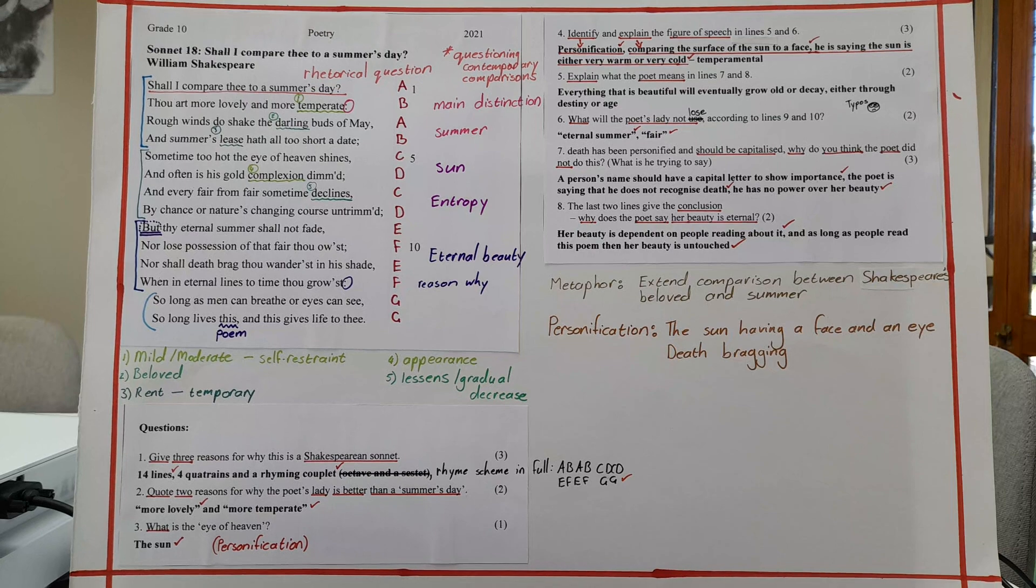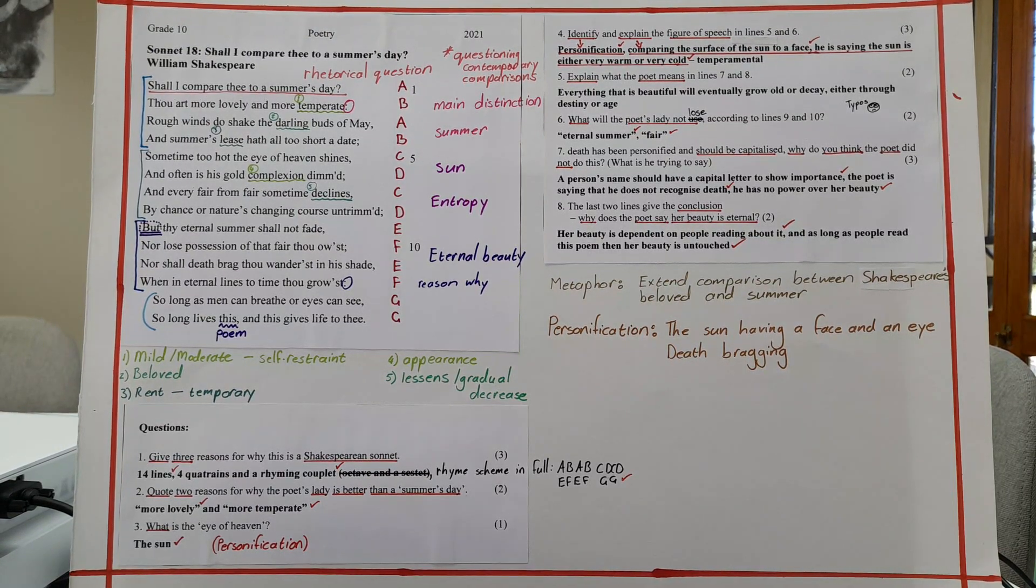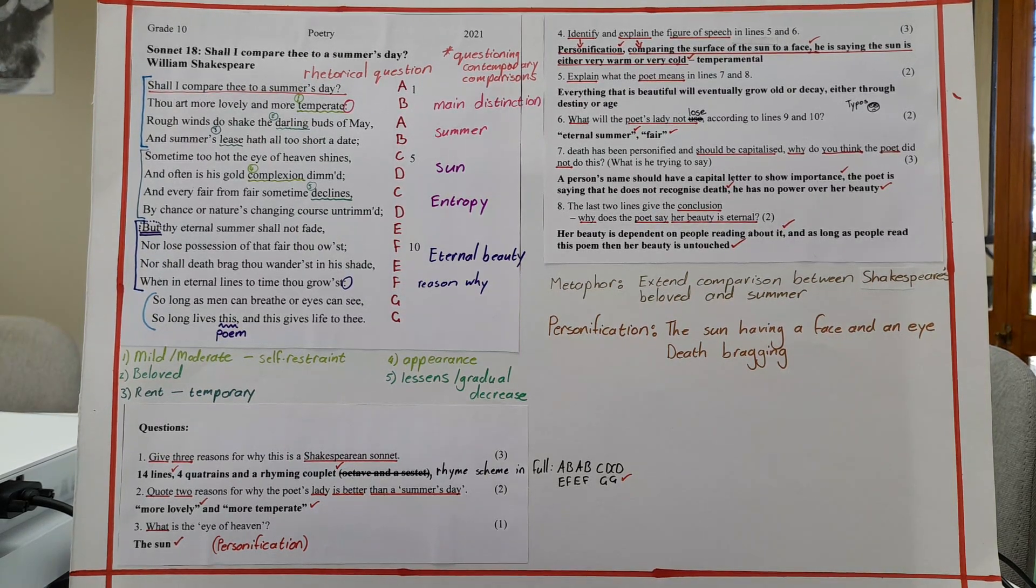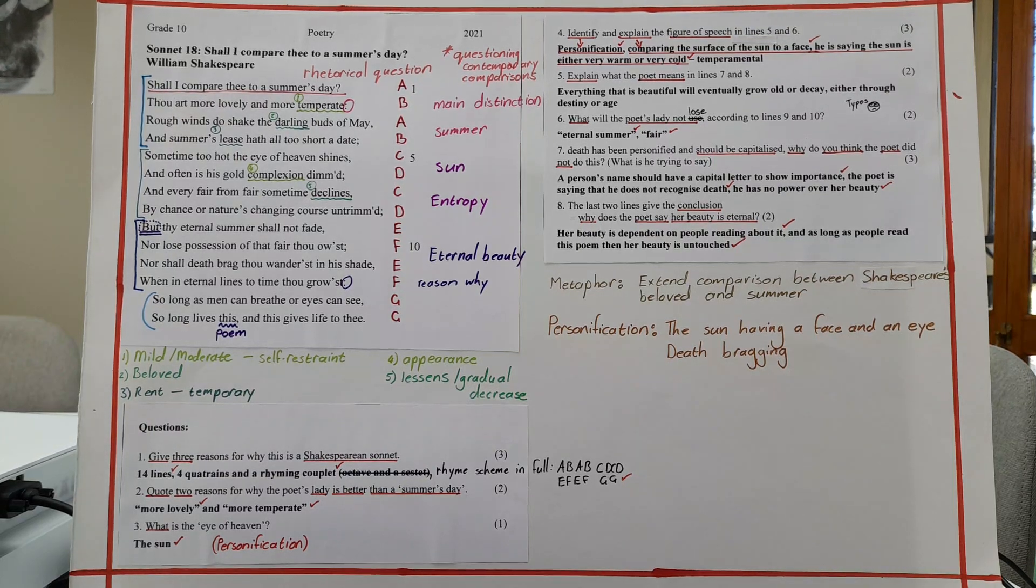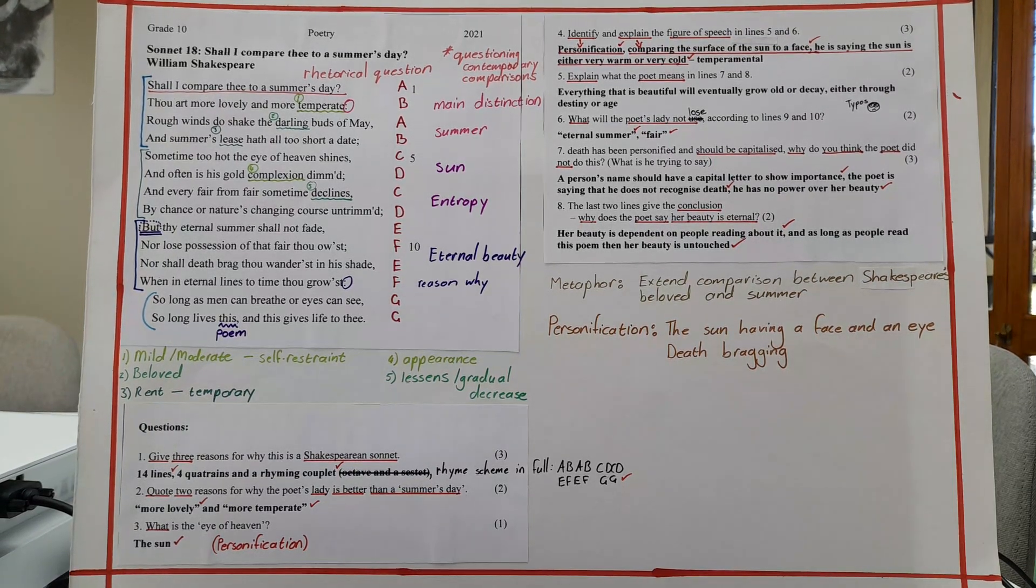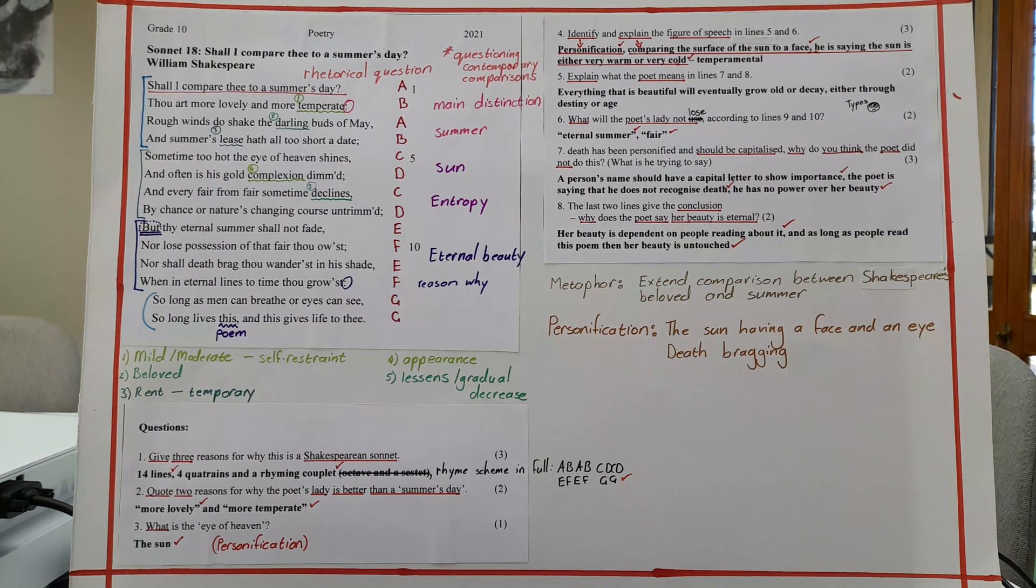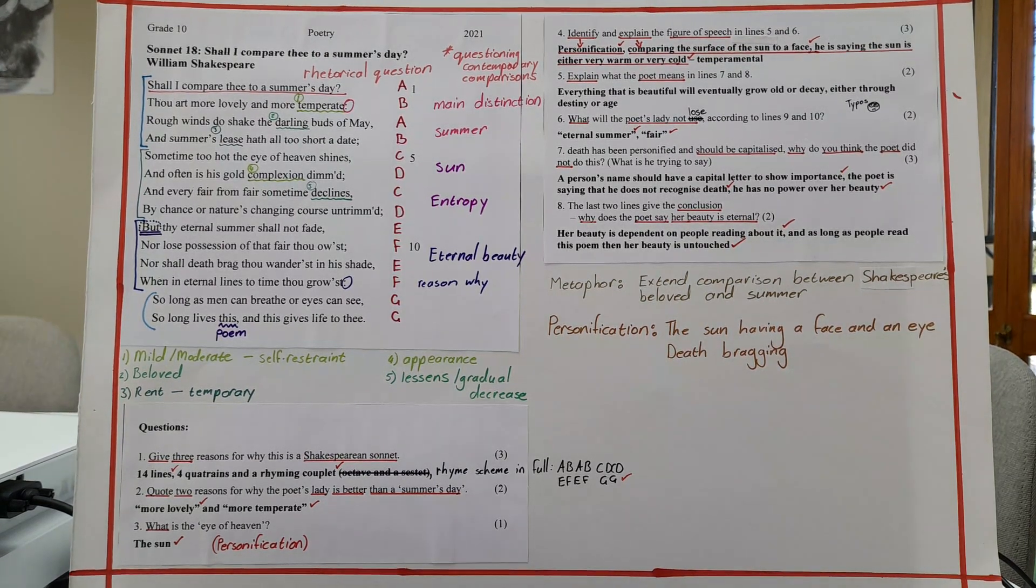So there are only two questions where it says quote. So please keep that in mind. Everything else needs to be paraphrased. If they ask you to quote, you have to quote. Generally it will be a quote with an explanation. If you are going to quote for something that doesn't require it, you are going to have to put it in inverted commas and then explain it. So it can't just be explain what the poet means in lines seven and eight and then you quote the line. No, that's not answering the question. Also it shows a lack of understanding.